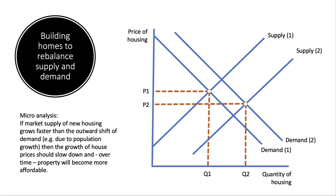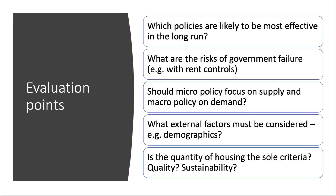Obviously the word 'assess' means you need to evaluate. Regarding micro and macro policies — which are likely to be most effective in the long run? You choose your ground and explain your reasoning. It's always worth mentioning the risks of government failure; for example, many economists argue that rent controls can sometimes create more problems than they solve. Should micro policy focus on supply and macro policy on demand, or the other way around? And what are the external factors influencing the market which may not be solvable by policy — demographic factors such as an aging population or the rise of single-family households?